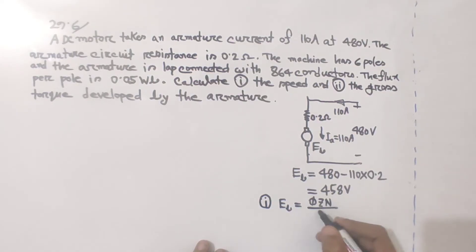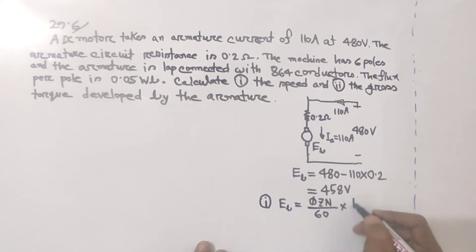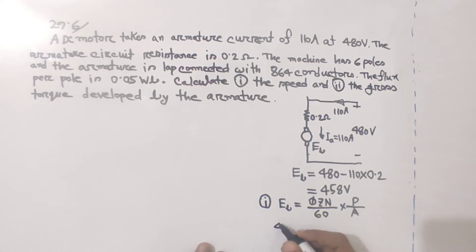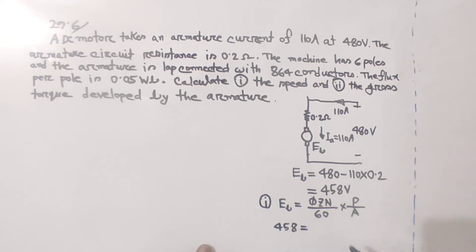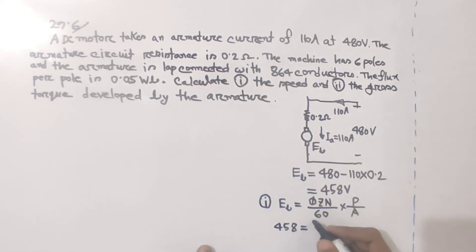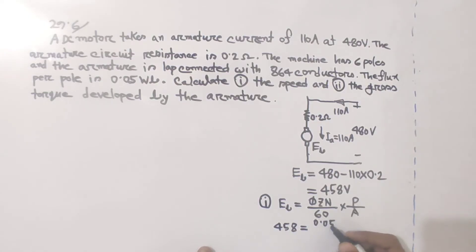The speed formula is: Eb = (Φ × Z × N / 60) × (P / A). We found the value of Eb to be 458V.